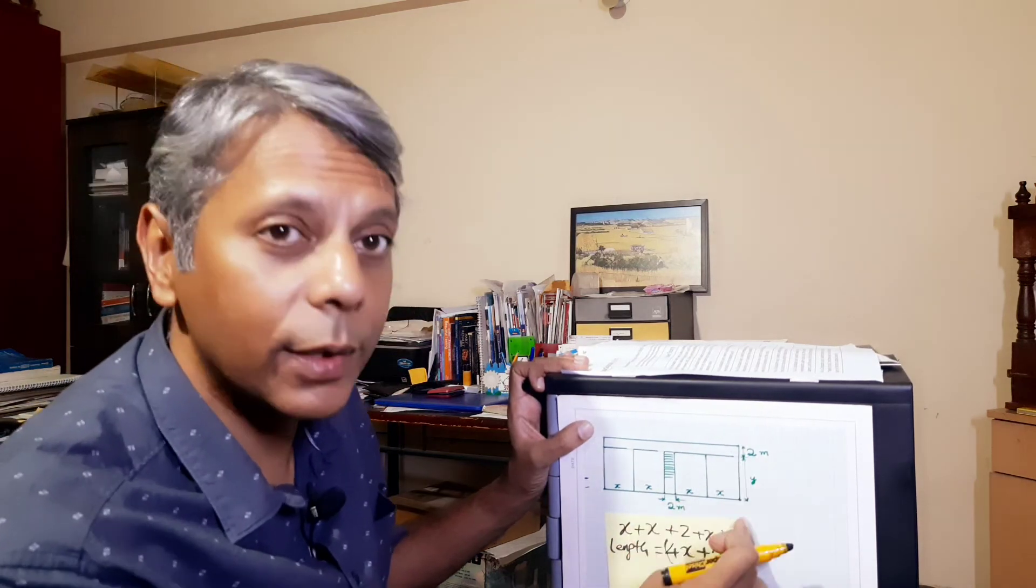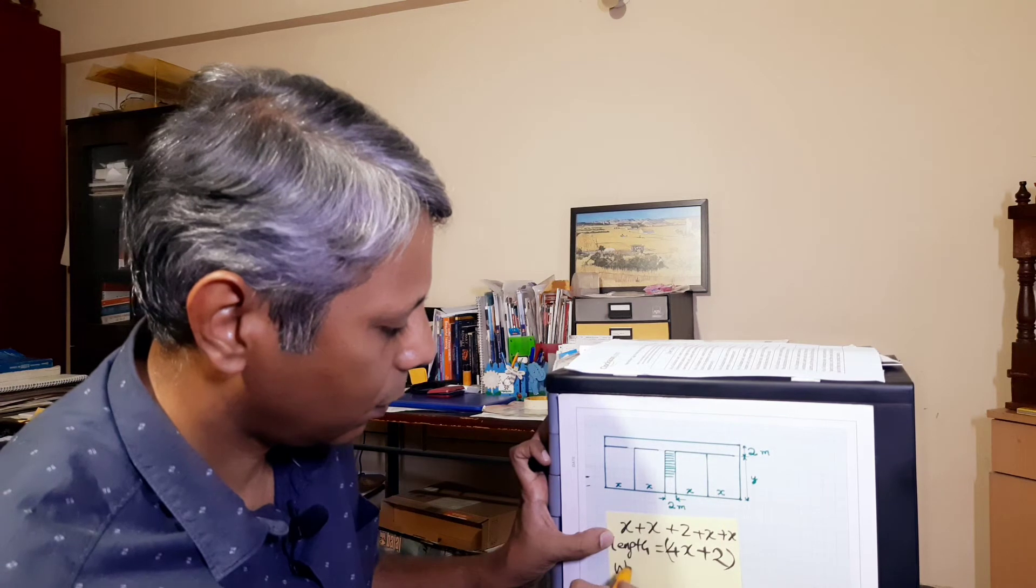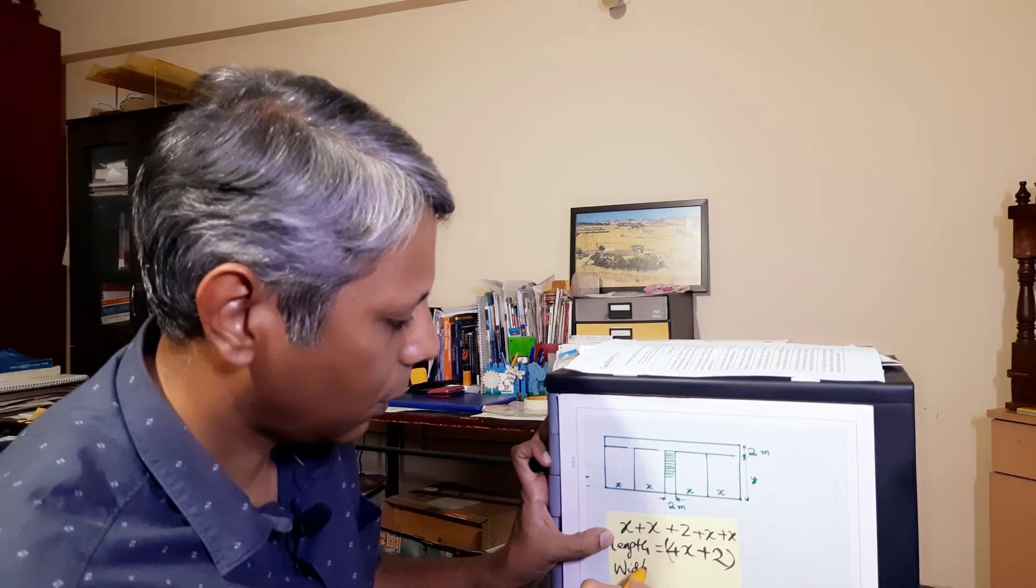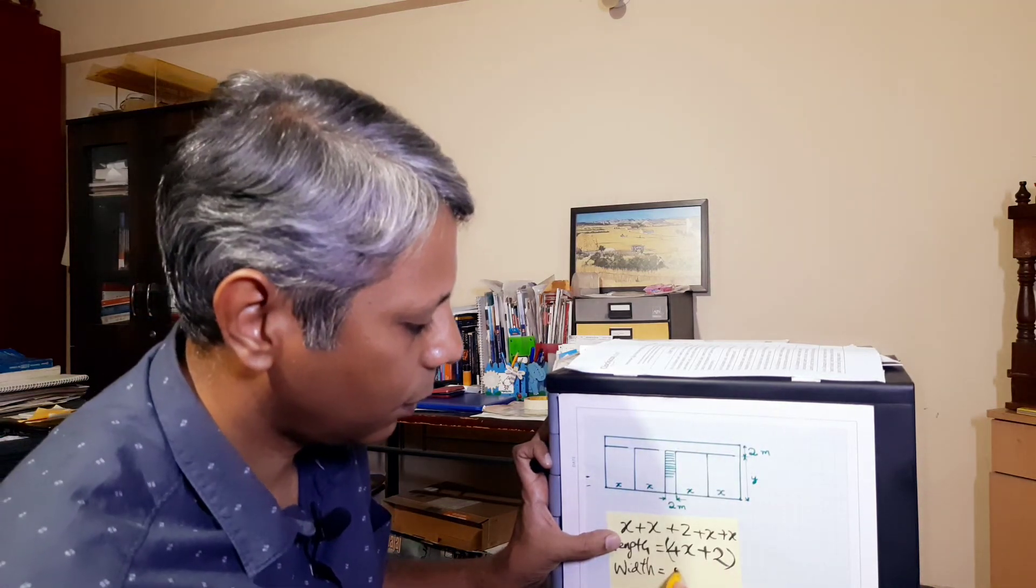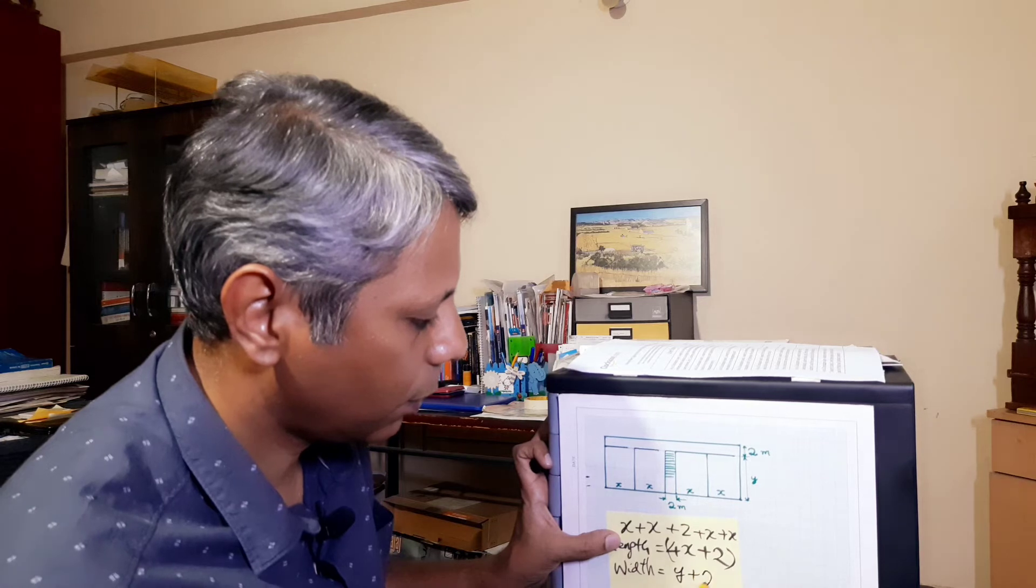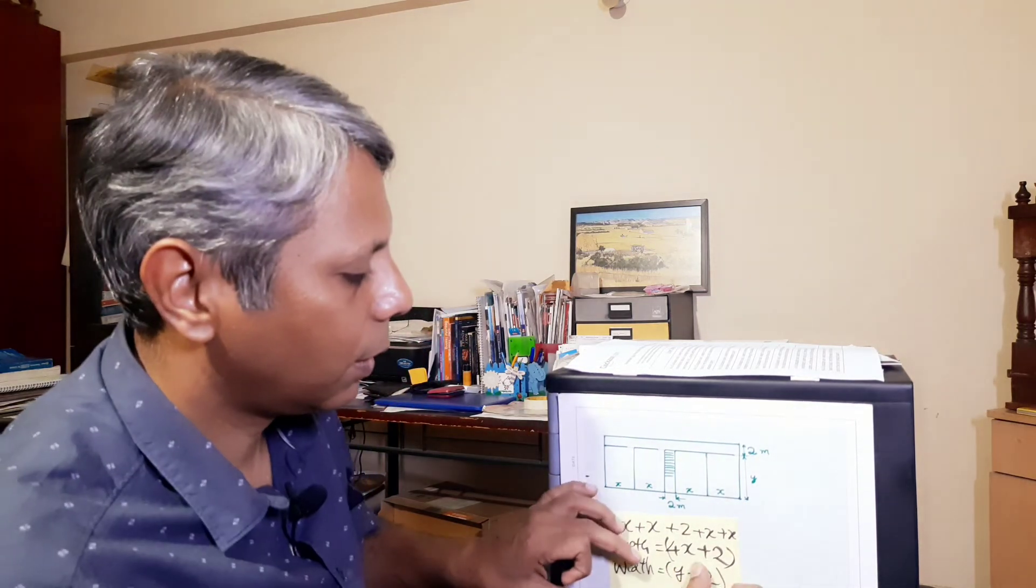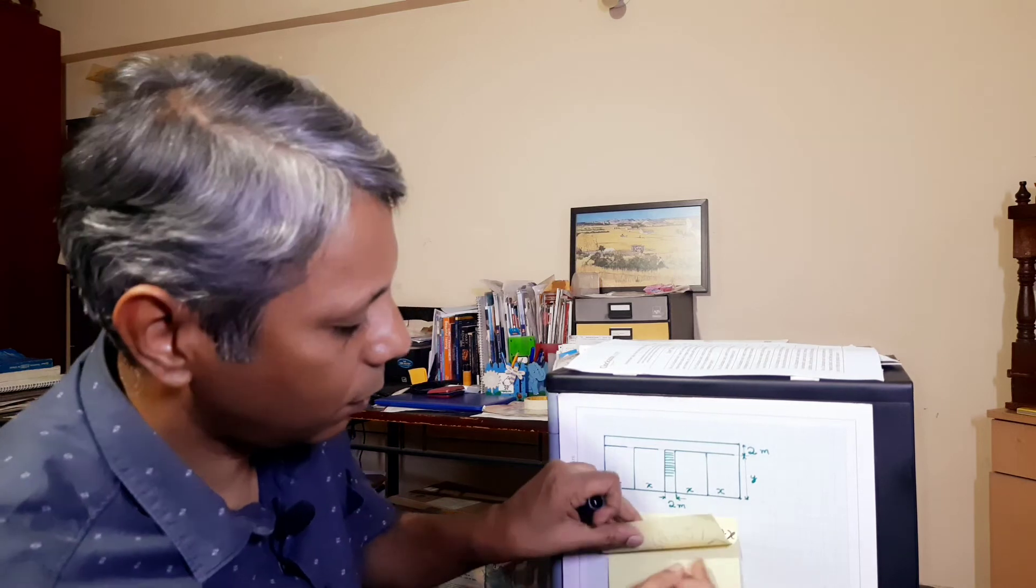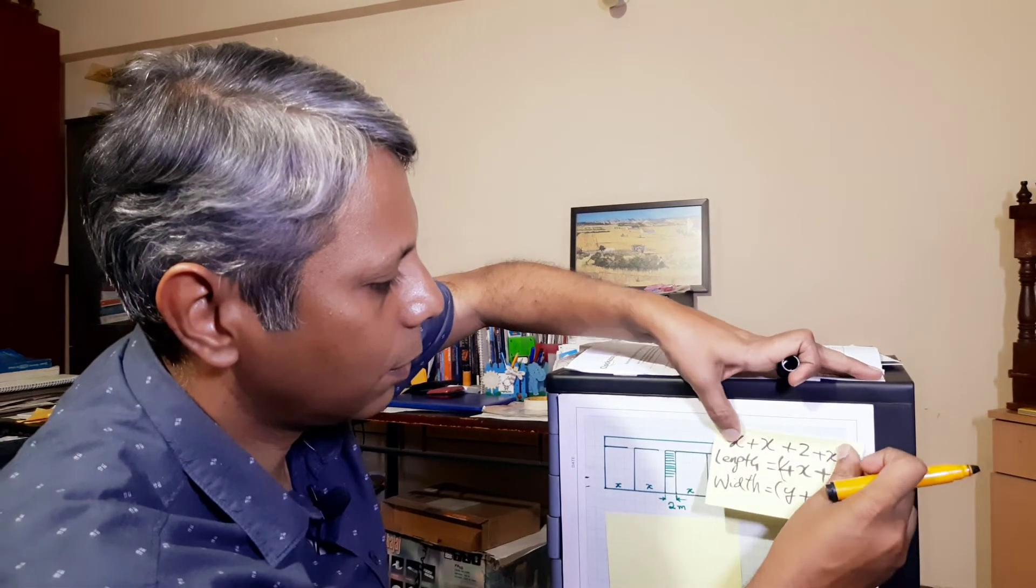And what's the width here? The width is y plus 2. So we have these two. So what would be the area?